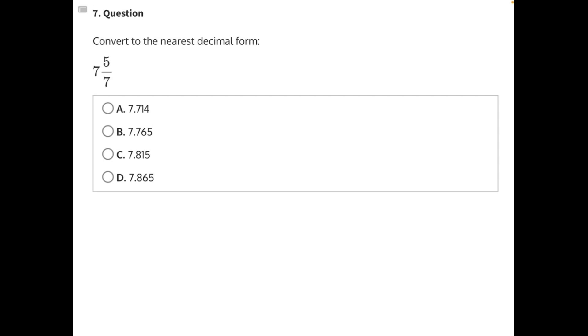Convert to the nearest decimal form. To convert a fraction to a decimal, we're going to need to divide. But let's start by separating out our whole number and our fraction.